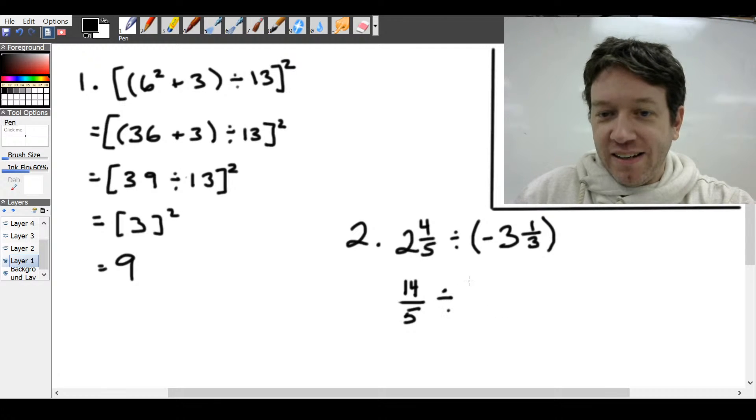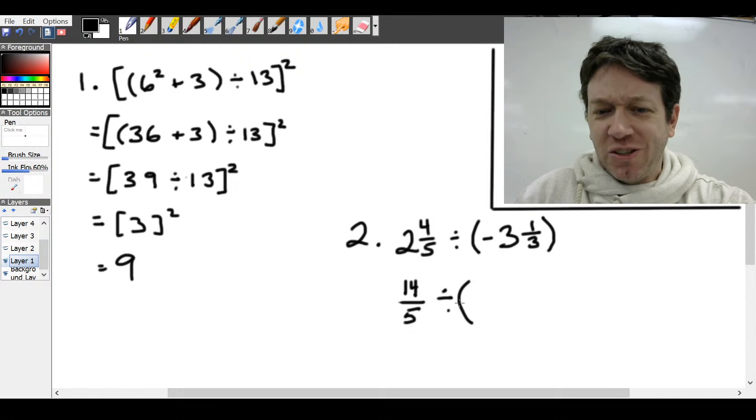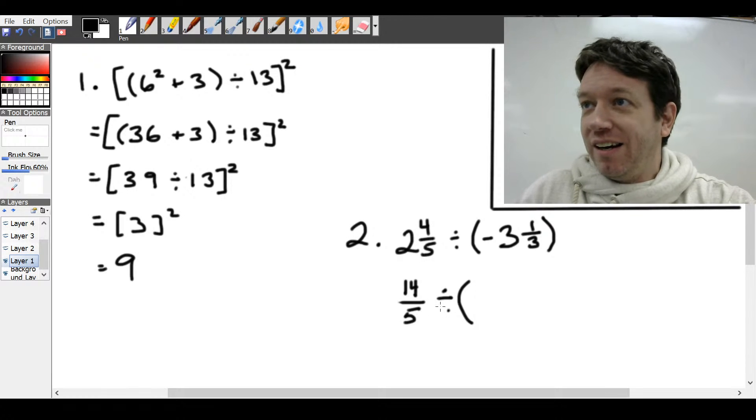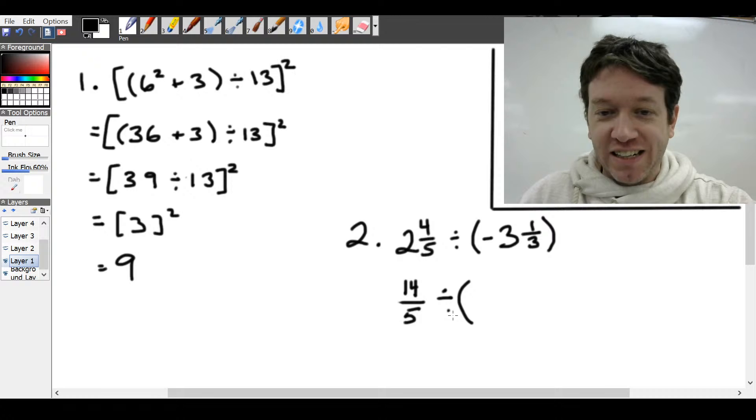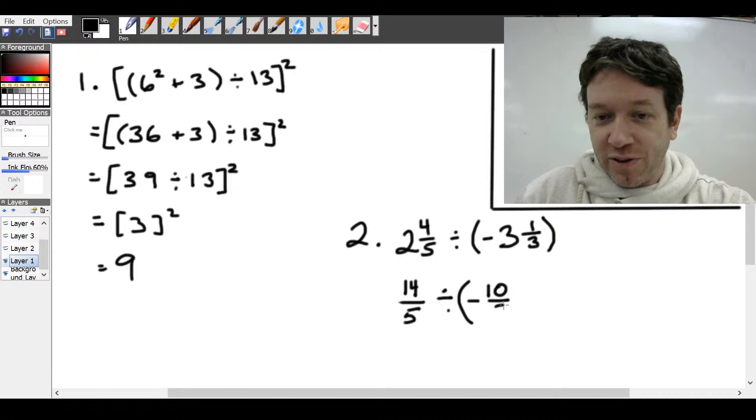So we're going to have 14. The denominator is going to stay the same 5. Next, we're going to divide by, again, we usually don't use the division sign in high school. We prefer writing everything as a fraction, even if it's a fraction of a fraction. That's fine. This negative we'll leave there for now because it's a negative number. 3 times 3 is 9 plus 1 is 10. So minus 10 over 3.